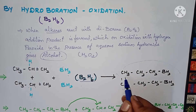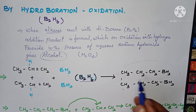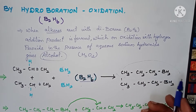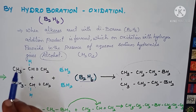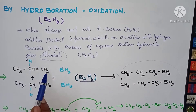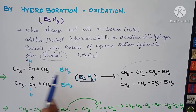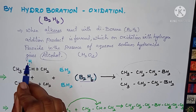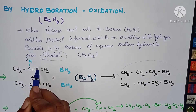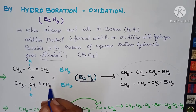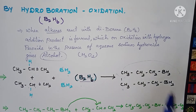The product is CH3-CH2-CH2-BH2. Here one hydrogen is going to accommodate, so automatically the double bond starts breaking. Next, the same one molecule of the addition product is taken, and again propene is added.